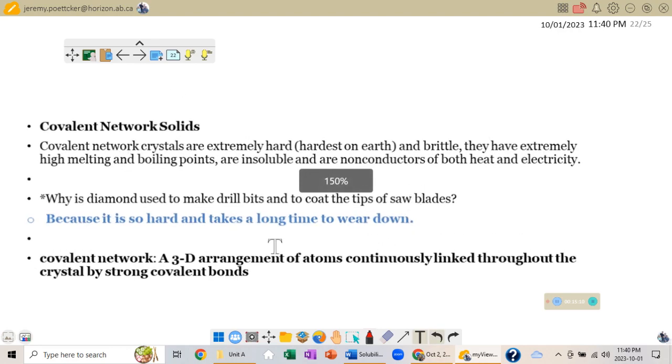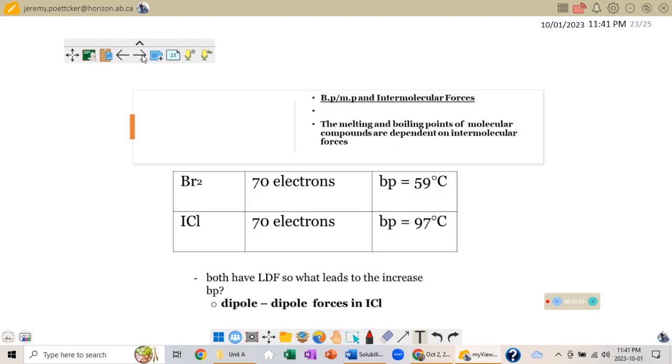Covalent network crystals are extremely hard. They are the hardest things on Earth. They're also somewhat brittle. They have extremely high melting and boiling points. They're insoluble and they are non-conductors of both heat and electricity. So why is diamond sometimes used to make drill bits and to coat the tips of saw blades? Because it is so hard and it takes a long time to wear down. A covalent network is a 3D arrangement of atoms continuously linked throughout the crystal by strong covalent bonds. So imagine your carbon, which normally as a central atom would form a tetrahedral structure, is just hooked to a whole bunch of other carbons. You're kind of imagining a diamond at that point.